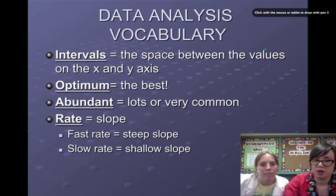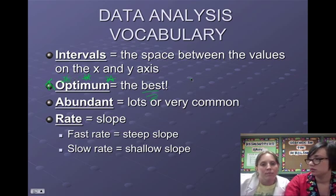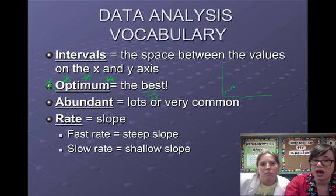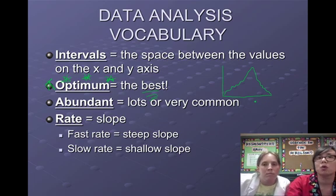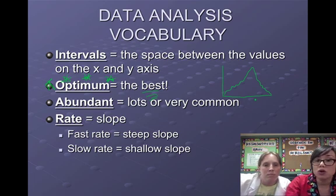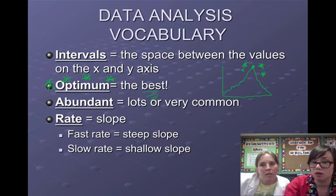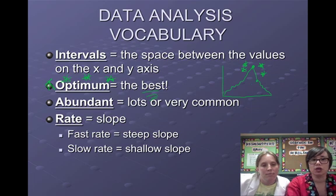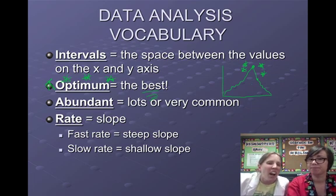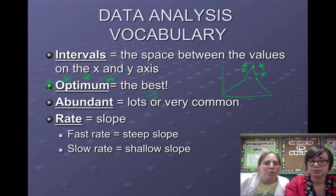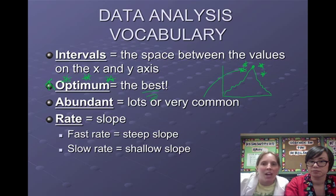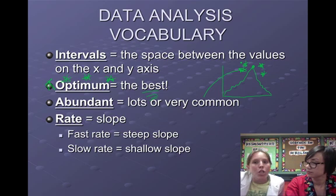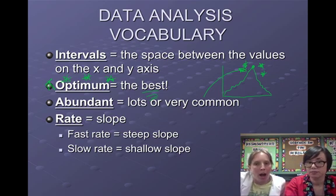Now let's look at the word optimum. Optimum is just a fancy way to say the best. In science class, they'll ask you, what is the optimum temperature for growth of a plant or the optimal pH for the number of tadpoles? All we're asking you to do is simply look for the highest point or the highest value on the graph because that shows you that that's the best. The next term that we're going to look at is the term abundant. It's kind of similar to optimum, sometimes used slightly differently. Abundant also means lots or very common. So it's going to point you to the same place on the graph. If it asks for where is something the most abundant, you definitely want to look for the highest point on the graph.